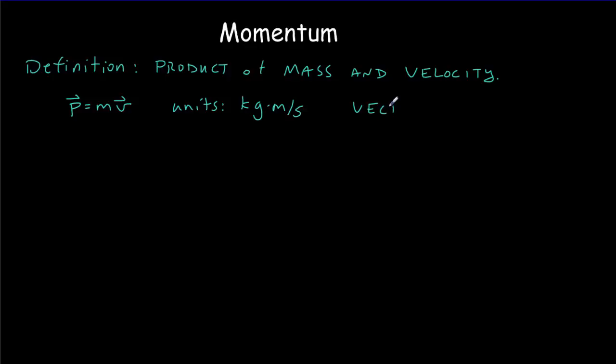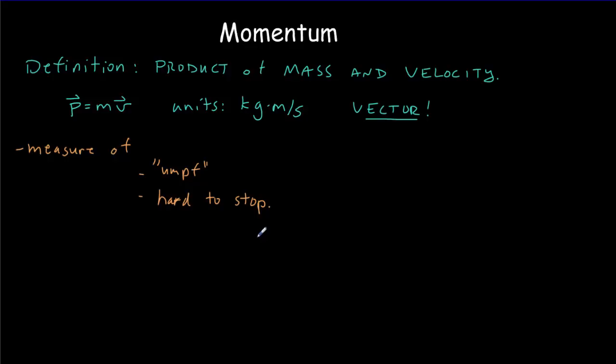So what is momentum a measure of? Well, we might say it's a measure of oomph — the more oomph something has, the more momentum it has. If it's got lots of oomph, it means it's going to be hard to stop. Objects with lots of mass and lots of velocity are of course the most difficult to stop. We could also say it's a measure of moving inertia — the ability to resist changes to motion.